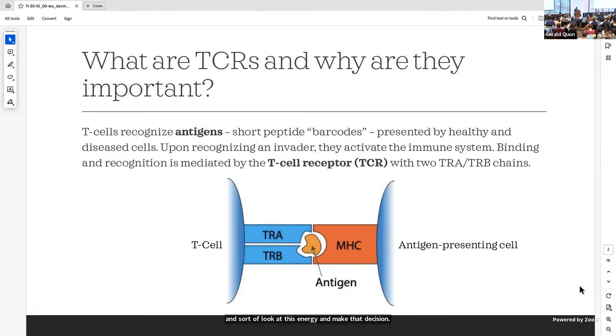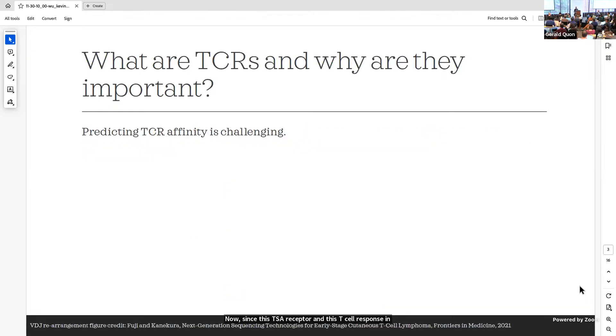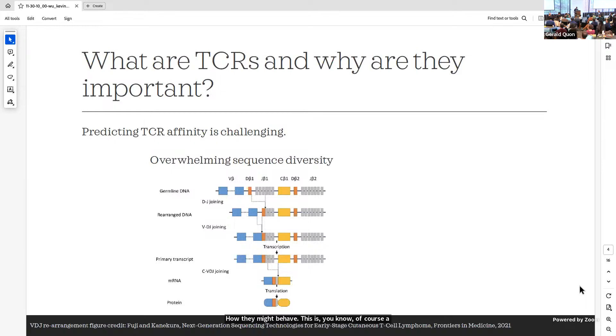Since this T-cell receptor and T-cell response in general is so important to how the immune system works, it's very important for us as computational scientists to be able to look at these systems computationally and predict how they might behave. This is of course a huge challenge, but it's also very difficult to do, and there's a couple of different reasons for that.